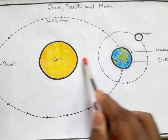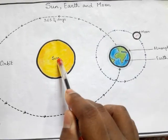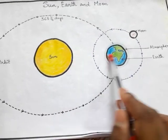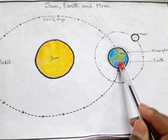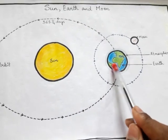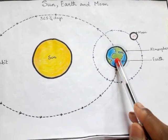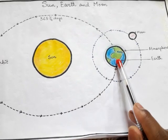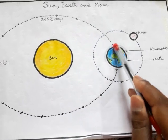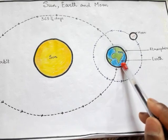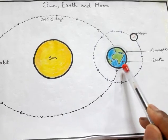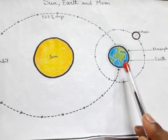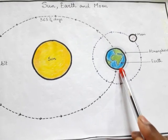The Earth is neither too far from the Sun nor too near to it. As a result, the temperature on Earth is suitable for living beings — it is neither too hot nor too cold.